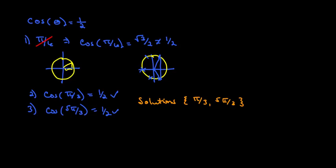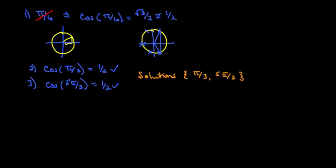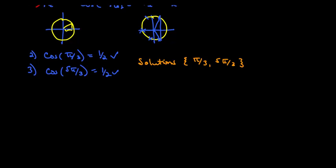Now if we don't restrict our angles, like if we ask what are all the solutions to the cosine of theta being equal to 1 half, we need to list every angle that has a cosine value of 1 half.